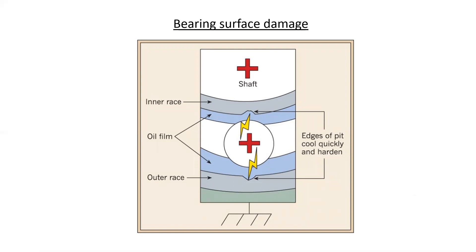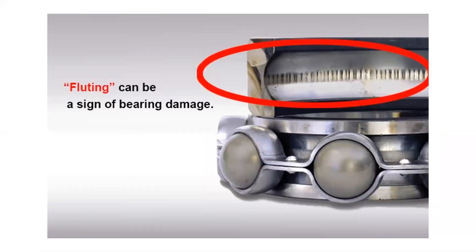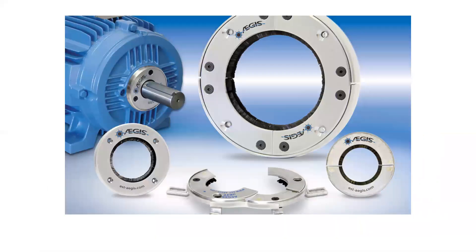Bearing surface damage occurs because high voltages induced into the motor assembly can arc across the metal bearing fixtures. Some motor types use ceramic bearings that are non-conductive, or other assemblies to prevent fluting — a sign of bearing damage where arcing has taken place between the bearing ball and the cup it rolls in. Shaft grounding systems can be introduced to equalize the voltage potential between the shaft and frame of the motor, using a conductive brush that rests against the shaft and is bolted to the frame.